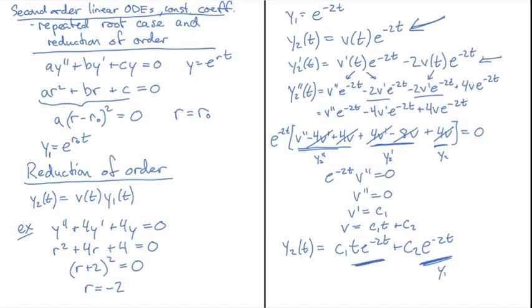So this function here is this new solution that we are hoping will be an independent solution. So we have to check the Wronskian.